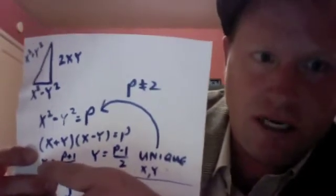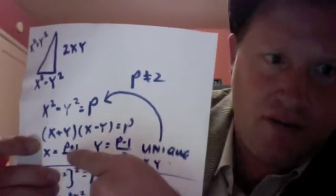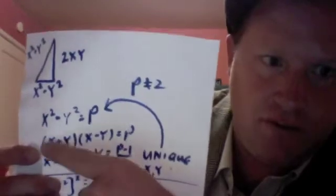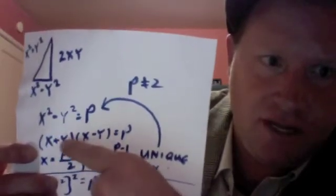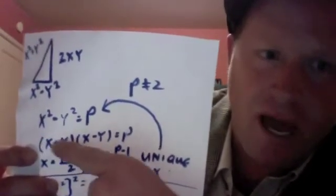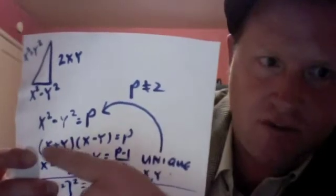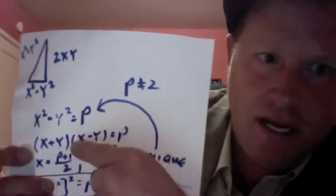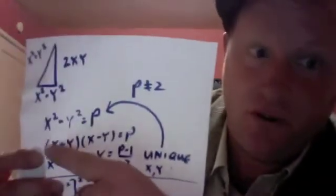Now I need to show uniqueness. Well, notice that if you plug in p plus 1 over 2 for x and y, they will add up to p. x plus y will add up to p. And then subtract them and x minus y will add up to 1. You can work this out on your paper, you'll see.